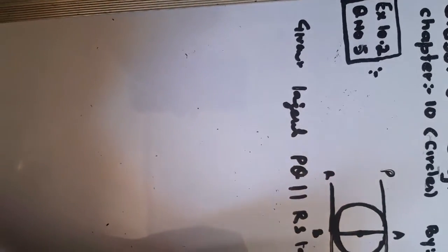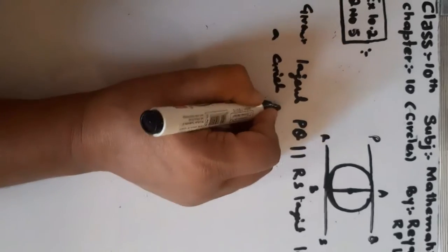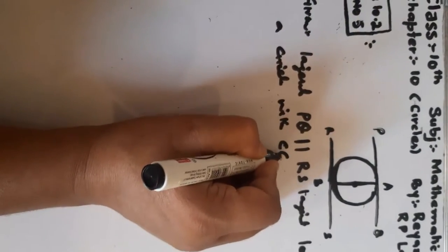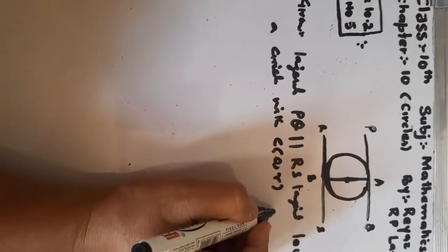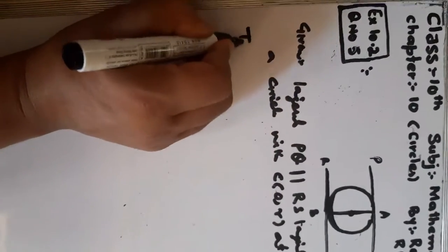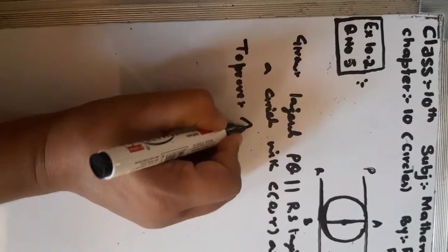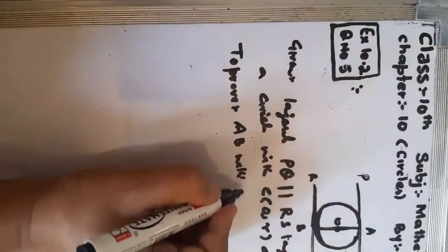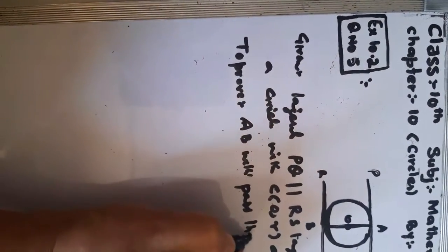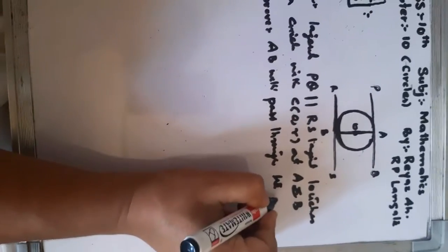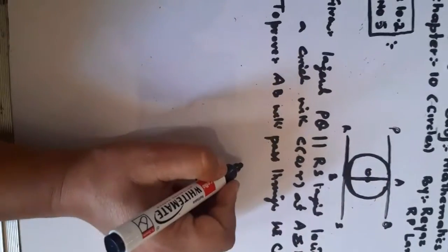Given: a circle with center O and radius r is touched by two parallel tangents at points A and B — these are the points of contact. To prove: AB will pass through the center O.